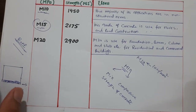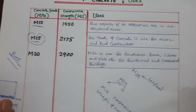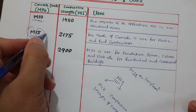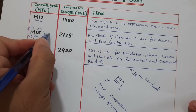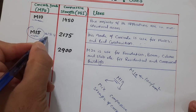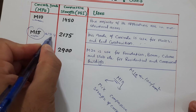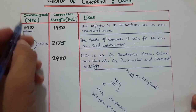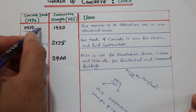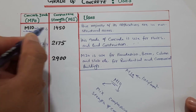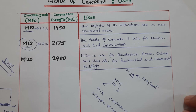The mix ratio for M15 is 1:2:4 — one part cement, two parts sand, and four parts aggregate. For M10, the mix ratio is 1:3:6 — one part cement, three parts sand, and six parts aggregate.